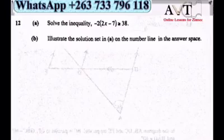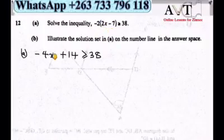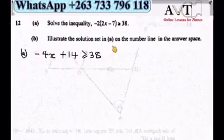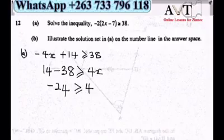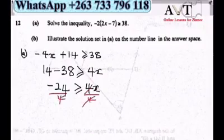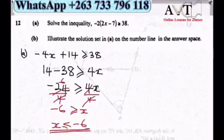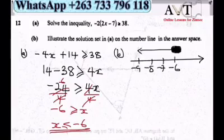Number 12: solve the inequality. Expanding: minus 2 times 3 gives minus 4x, and minus 2 times minus 7 gives positive 14. Rearranging with the algebraic term on the right to remove the negative: 14 minus 38 is greater than or equal to 4x. Dividing both sides by 4 gives x less than or equal to minus 6. This is our final answer, which we represent on a number line.